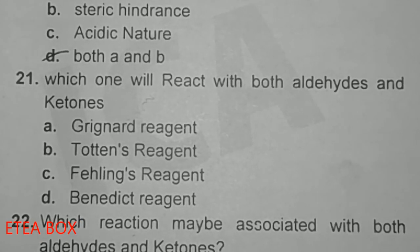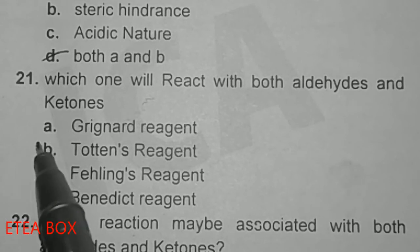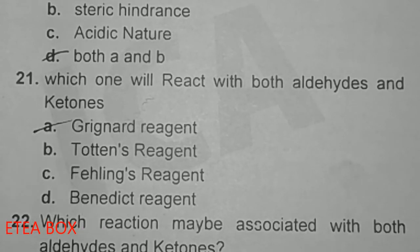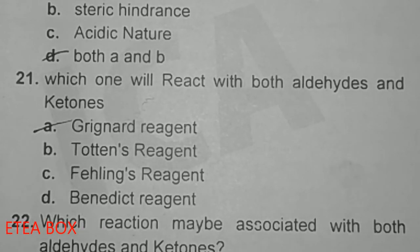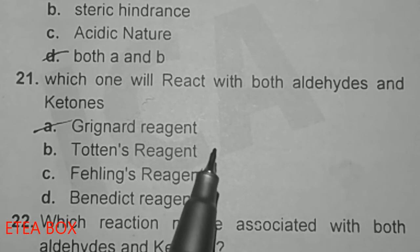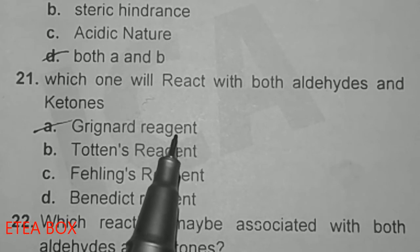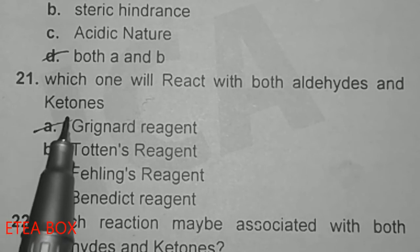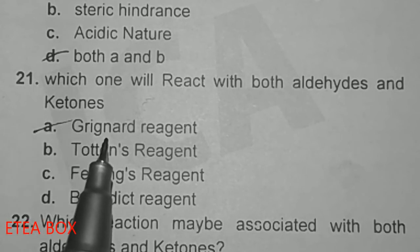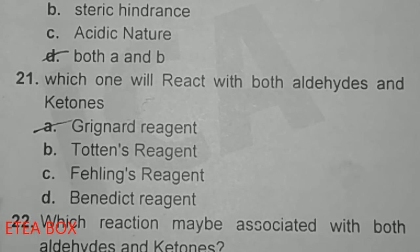Grignard reagent reacts with both aldehydes and ketones, while Fehling's solution, Tollens' reagent, and similar reagents react with aldehydes only. When aldehyde reacts with Grignard reagent it gives primary and secondary alcohols; when ketone reacts with Grignard reagent it gives tertiary alcohol.